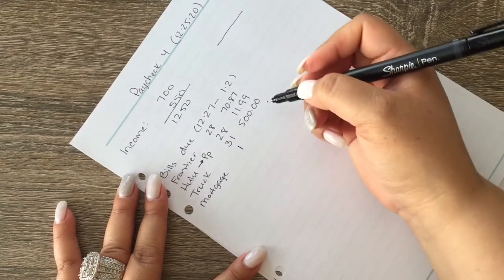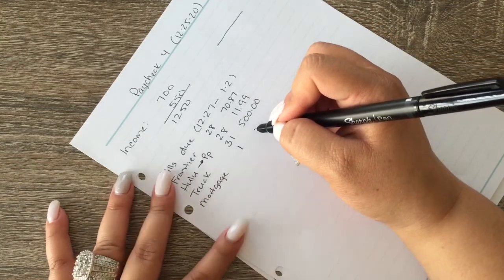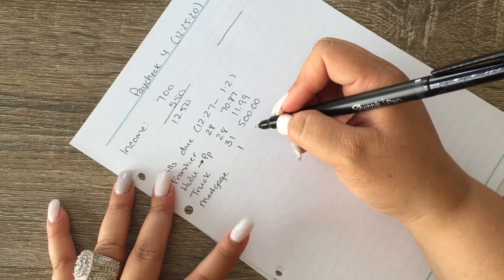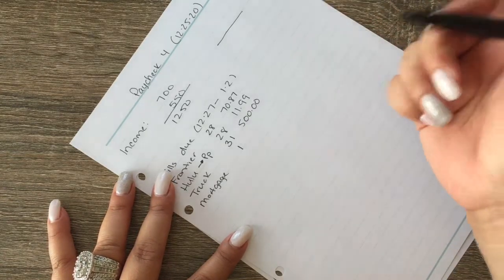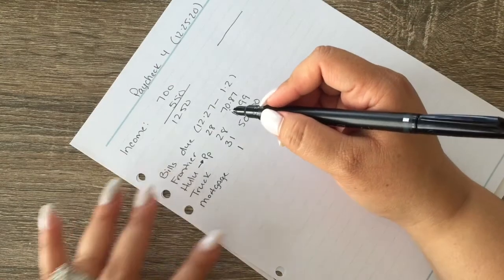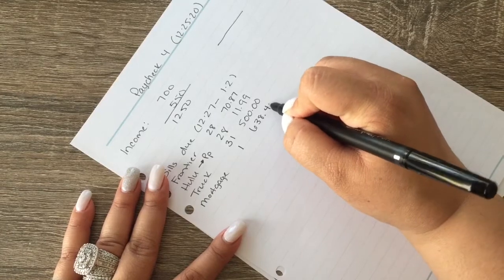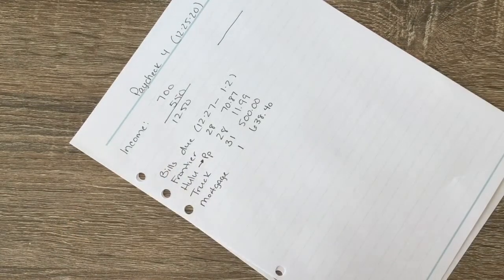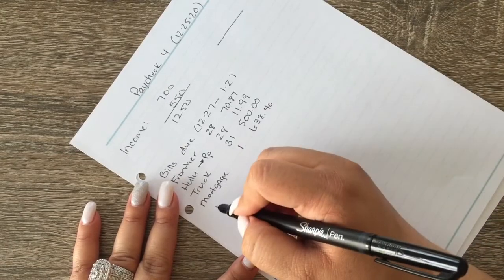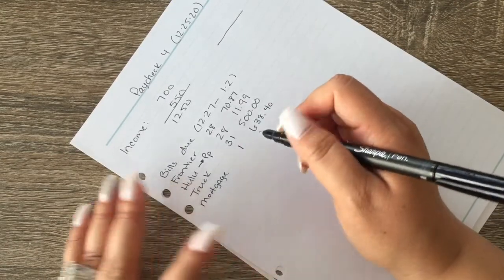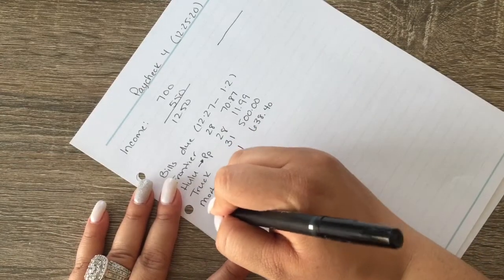That's due on the first which we do get a grace period up to the 10th or something, and that is actually $638.40 and we do usually give $100 more so that will definitely be a different amount. I guess I could put it in but I don't know.